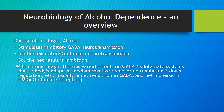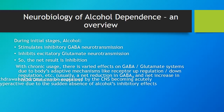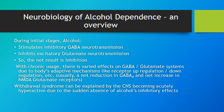During the initial stages of alcohol use, alcohol stimulates GABA neurotransmission and inhibits glutamate neurotransmission, so the net result is inhibition. With chronic usage, there are varied effects because of receptor upregulation, downregulation, etc. Generally, there is a net reduction in GABA-A receptors and a net increase in NMDA glutamate receptors. Withdrawal symptoms can be explained by the central nervous system becoming acutely hyperactive due to the sudden absence of alcohol's inhibitory effects, to which the body has become used.